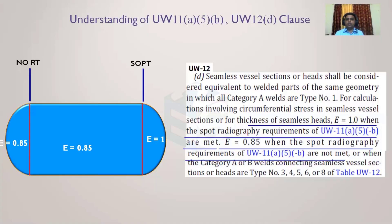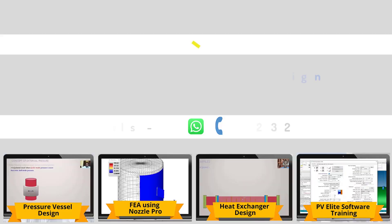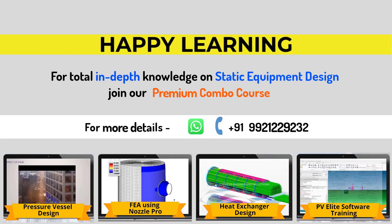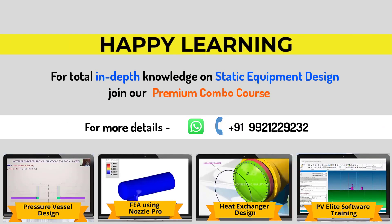Since we are not taking advantage of the radiography at the circumferential junction, the joint efficiency is reduced from 1 to 0.85. This is the end of the welding chapter covering joint efficiencies, types of welding, categories of welding, full radiography requirements, spot radiography requirements, clause UW-11a5b, and RT1, RT2, RT3, RT4 markings.